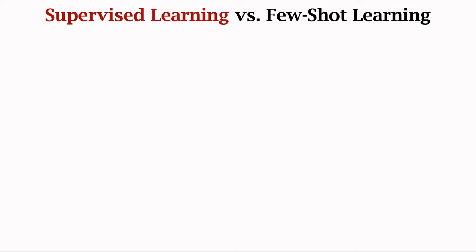The idea can be implemented as follows. First, learn a similarity function from a large-scale training dataset — the similarity function tells us how similar two images are. In the next lecture, we will study the Siamese network, which can serve as a similarity function. The network can be trained using a large-scale dataset such as ImageNet. After training, the learned similarity function can be used to make predictions for unseen queries. We compare the query with every sample in the support set, calculate similarity scores, and find the sample with the highest similarity score to use as a prediction.